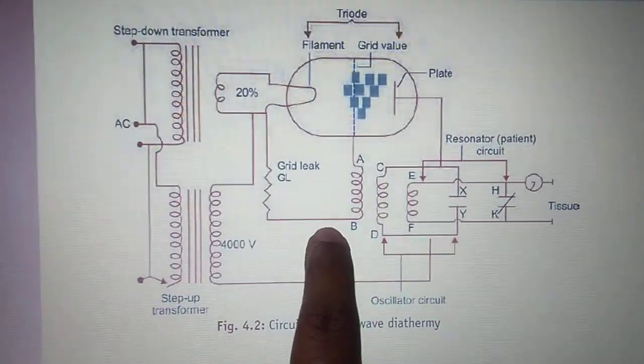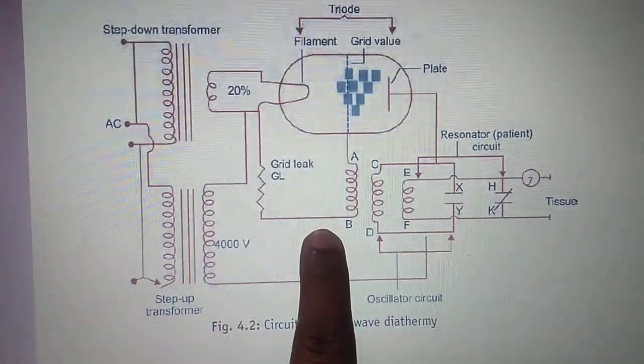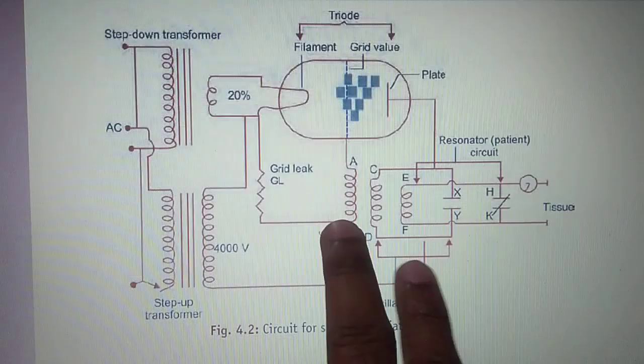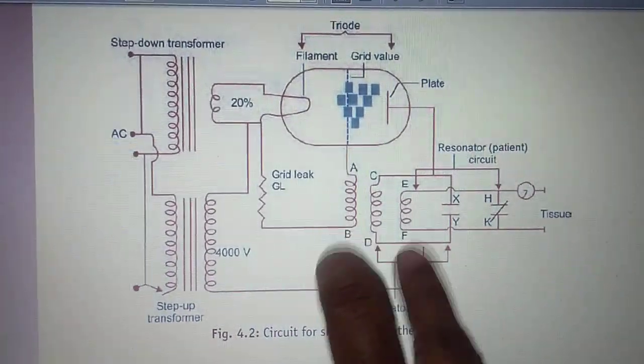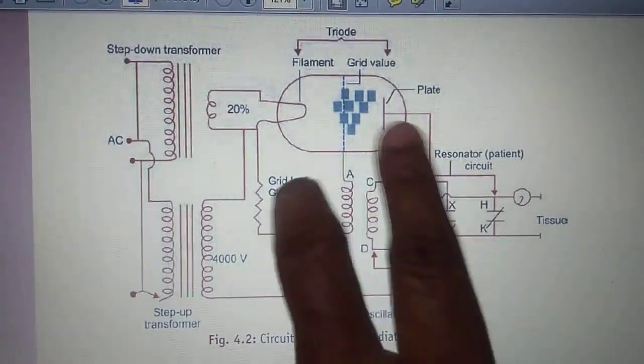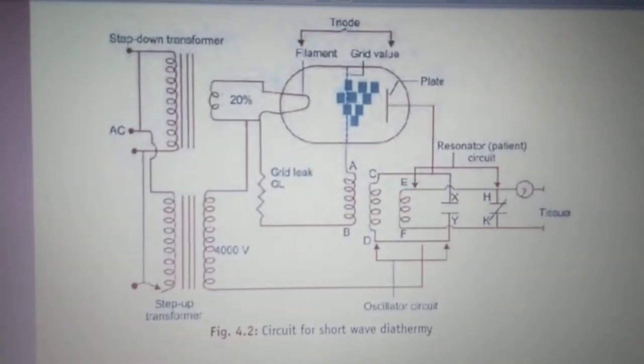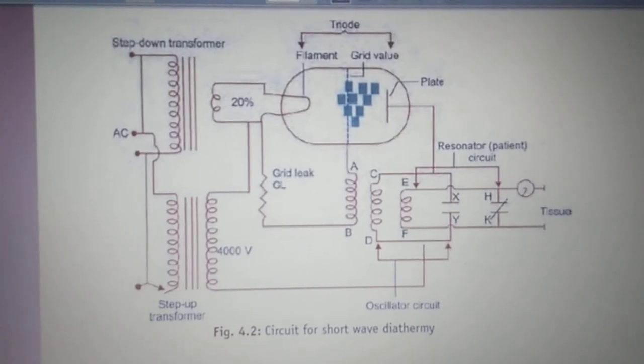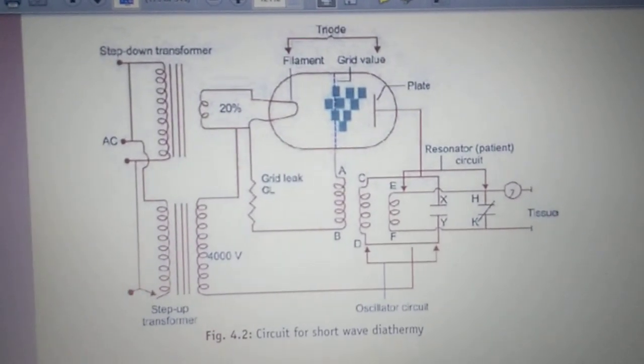Nearby there is one more coil, AB. What is the role of this we will talk about in the working principle. Another coil EF has been put up, so two coils AB and EF are placed near to the CD. What are their roles we will come to know in the working principle.